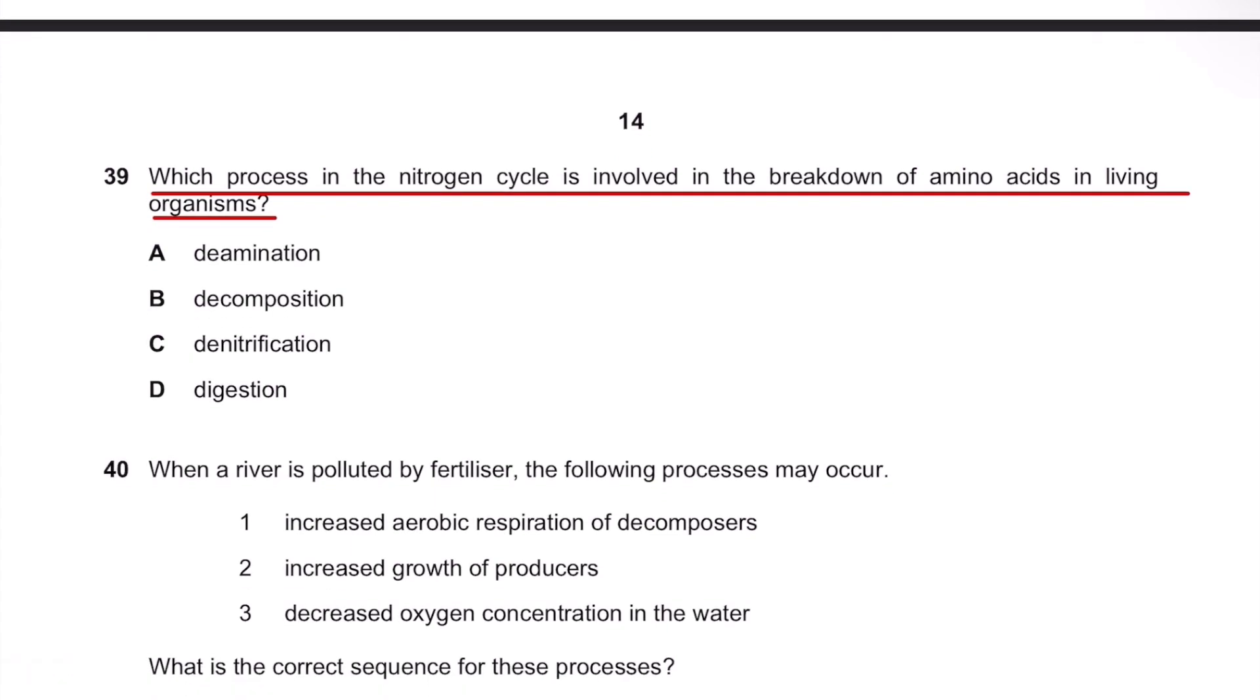When living organisms die, their proteins are broken down into amino acids. These amino acids then get converted to ammonia or urea by a process called deamination.